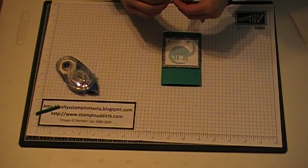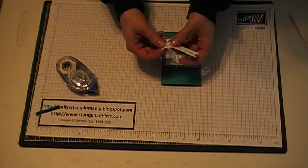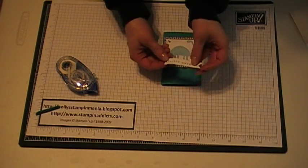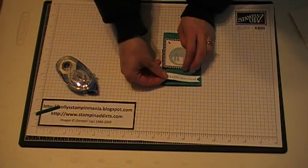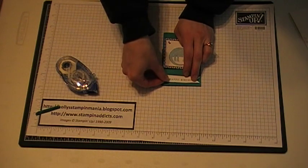And I put little dimensionals on the back of there, and then I just kind of bent this up like this. And I came in and placed this right at the bottom.